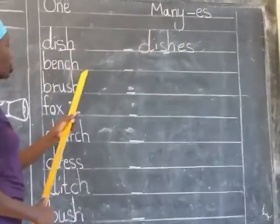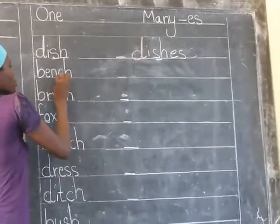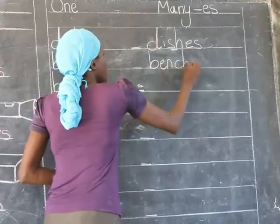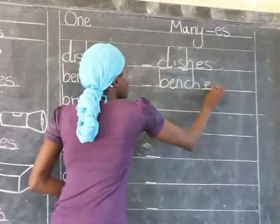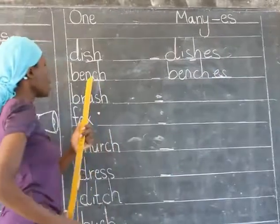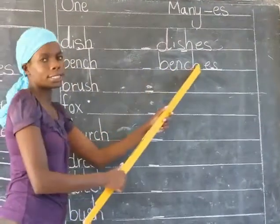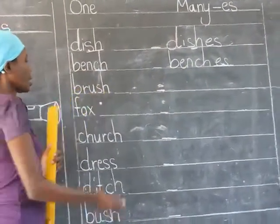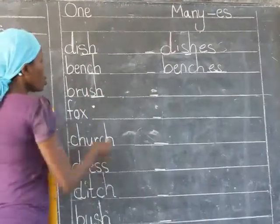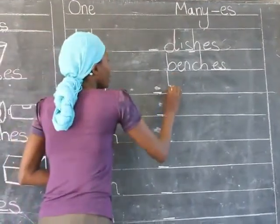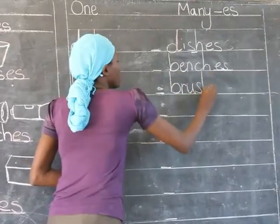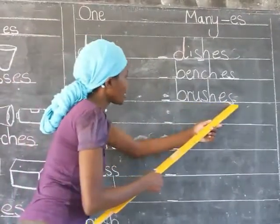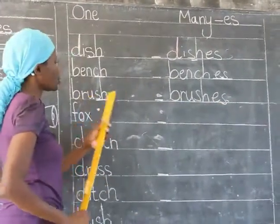I have the word bench. Bench is ending with CH. Write the whole word: bench. Then add E and S — it's going to be benches. Bench, benches. I have here brush. It is ending with SH, so write the whole word as it is: brush. Add E and S — it's going to be brushes. Brush, brushes.